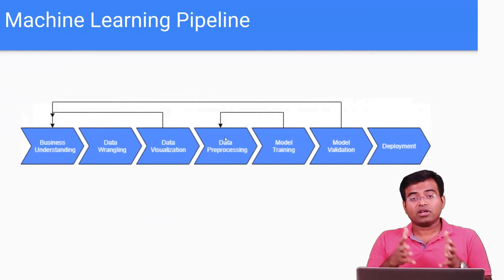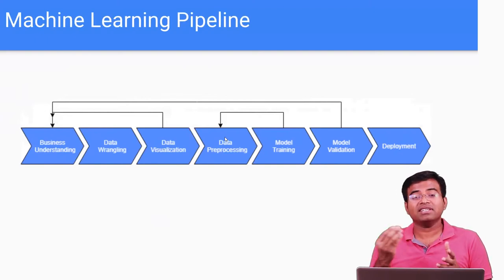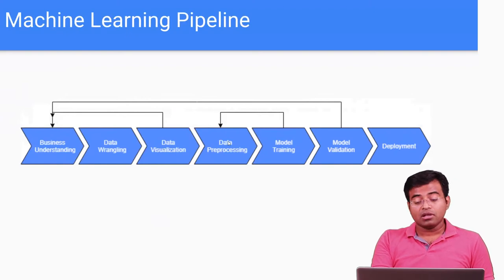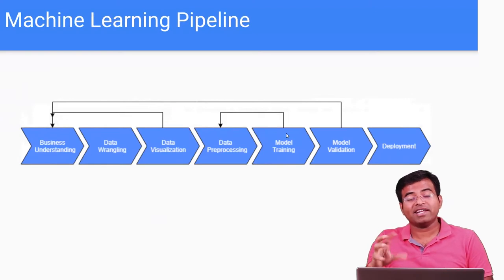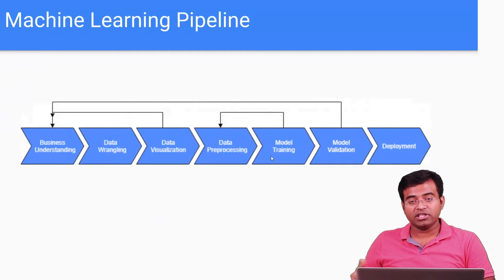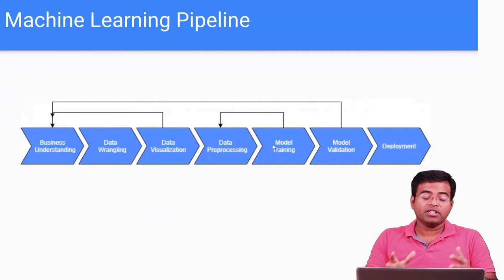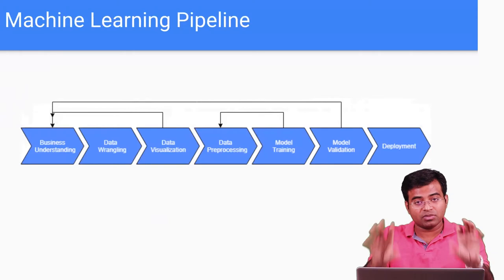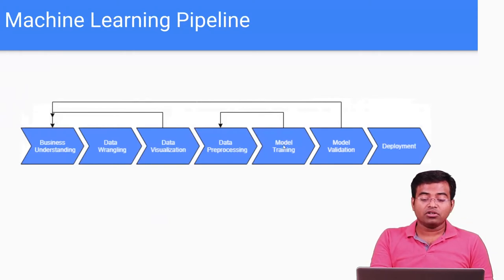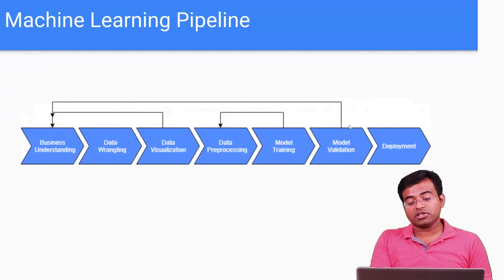Data needs to be pre-processed because machine learning has certain expectations and your data has to match them. Once the data is ready after pre-processing, you get into model training. The same data is ingested into a learning algorithm so that it creates a trained model. During training, if you realize there's some problem, you go back and do more pre-processing. Then you proceed to model validation — if something is not working right, you again go back to data pre-processing.